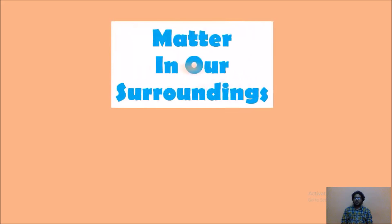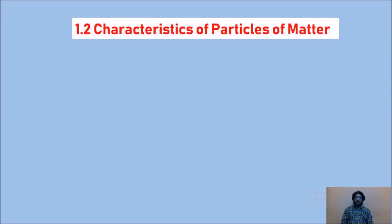Hi students, welcome back. In our previous lecture we learned about the physical nature of matter, where we discussed that matter is made up of particles. In this video we are going to learn the characteristics of particles of matter. If you haven't watched that video, I'll provide a link in the description. We are in Chapter: Matter in Our Surroundings — this is Lecture 2, covering the second topic: characteristics of particles of matter. There are mainly three characteristics we will cover.